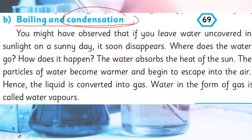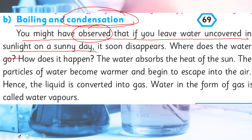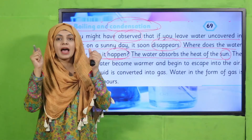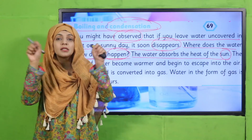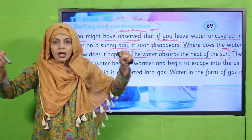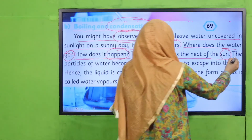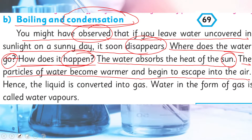Boiling and condensation. You might have observed that if you leave water uncovered in sunlight on a sunny day, it soon disappears. Where does the water go? How does it happen? The water goes into the air. The water absorbs the heat of the sun, and the particles inside the water start to move very fast and move far apart from each other, turning into water vapors or gas. The particles of water become warmer and begin to escape into the air — hence the liquid is converted into gas.